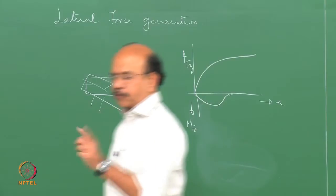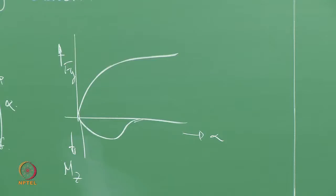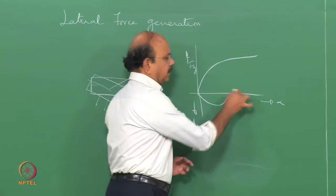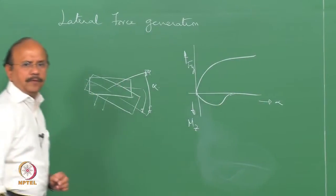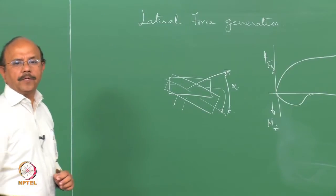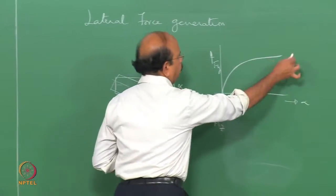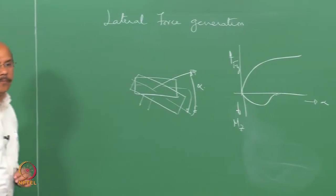The question towards the end of the class was: why is the aligning torque taking this particular shape? In other words, why does the aligning torque become zero when the lateral force reaches its saturation point?